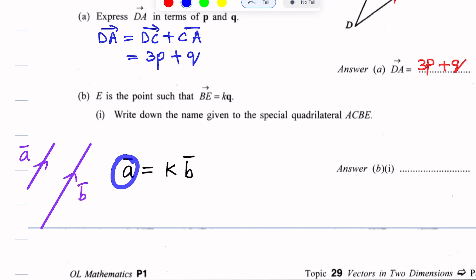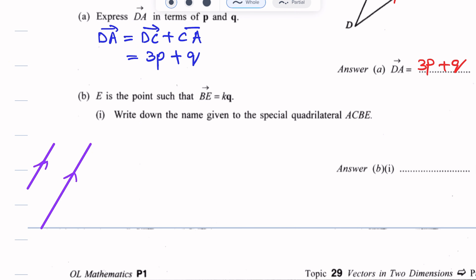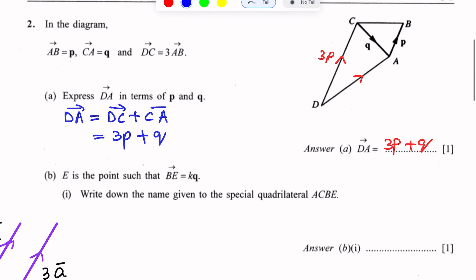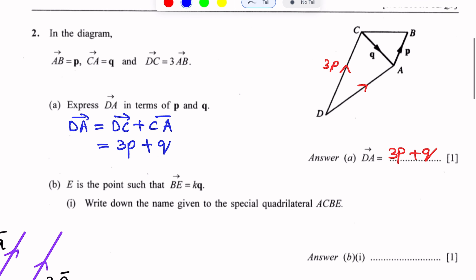If vector A equals K times vector B, then the two vectors are parallel. For example, DC equals 3 times AB, meaning DC is parallel to AB. Similarly, BE is parallel to Q vector.